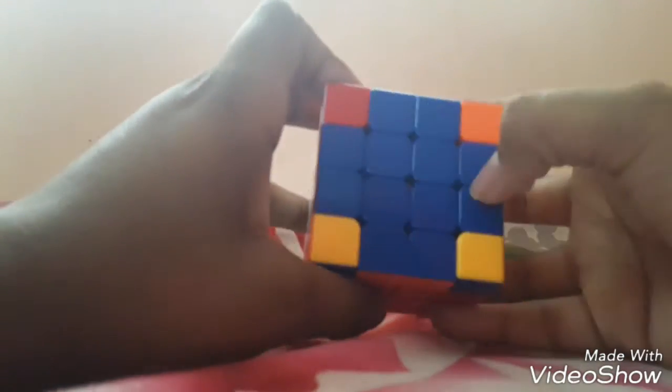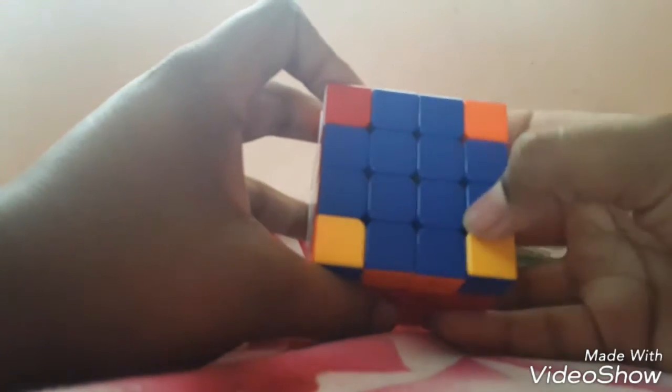Upside U2 two times, right inner layer r once, upside two times U2, right inner layer inverted r', upside two times U2, right inner layer inverted r', upside two times U2, front twice F2, right inner layer twice r2, and front twice F2. And now we can see that we completely got the cross.